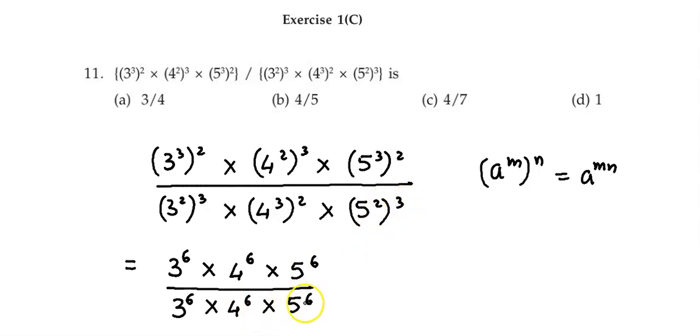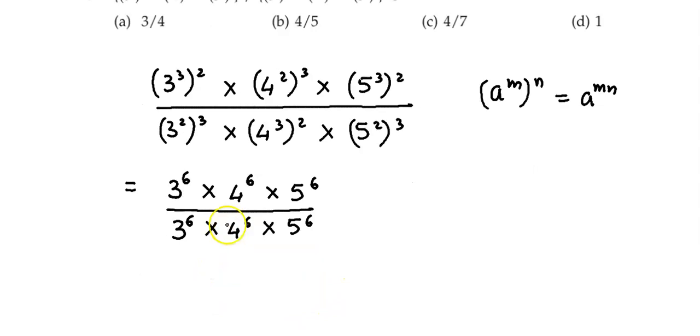Now if we simplify this, 3 raised to 6 cancels with 3 raised to 6, 4 raised to 6 with 4 raised to 6, and 5 raised to 6 cancels with 5 raised to 6. So finally we have the value as 1, so the correct answer is option D.